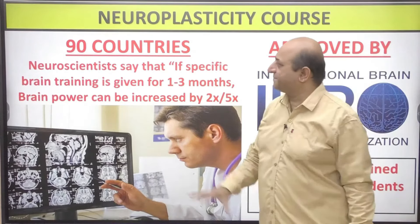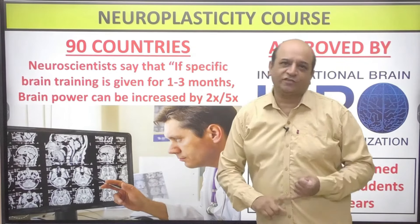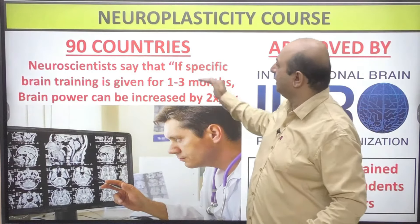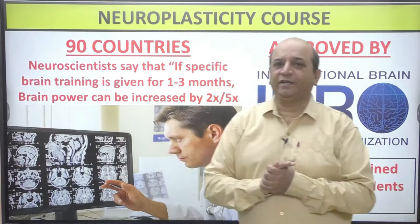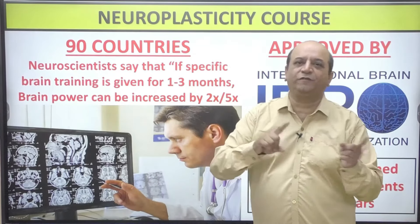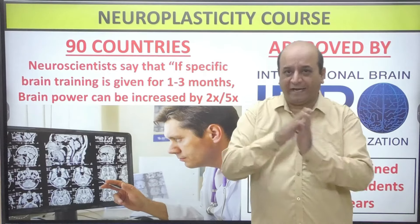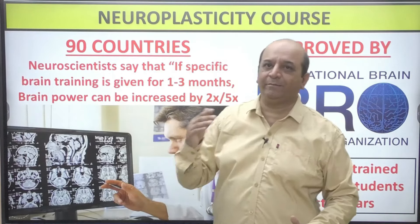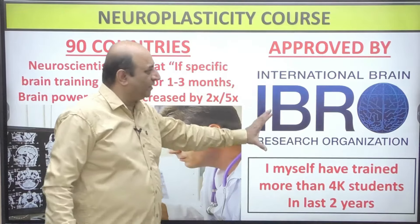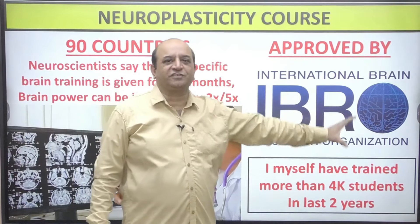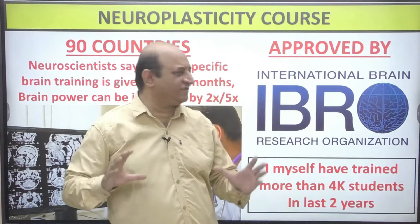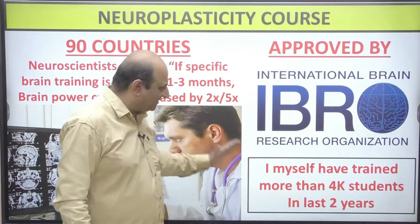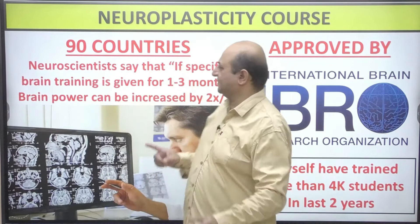The neuroplasticity course is being practiced in 90 countries. Neuroscientists say that if you give training to the brain for 1 to 3 months, your brain performance can be increased by 2x to 5x — that means 200 to 500 percent improvement. This fact is endorsed by IBRO, the International Brain Research Organization, a body in the USA which validates brain courses. I myself have trained more than 4,000 people with 100% results.